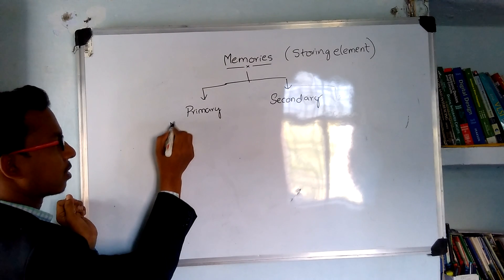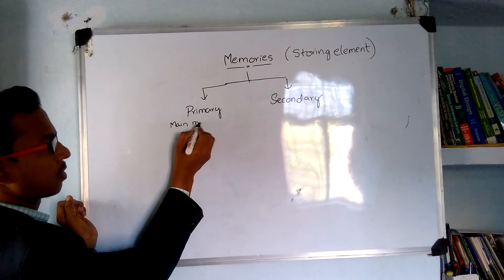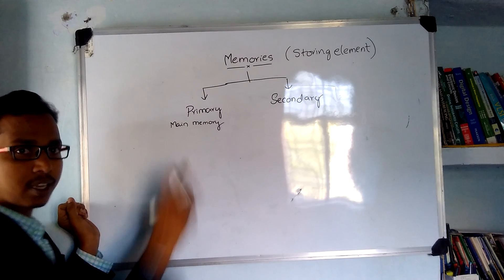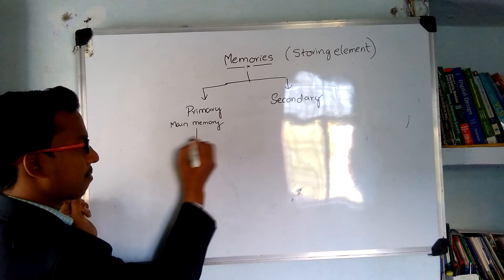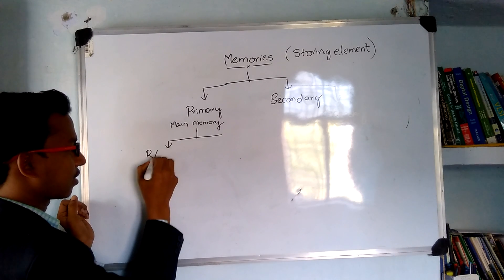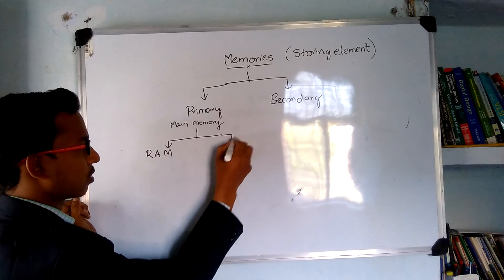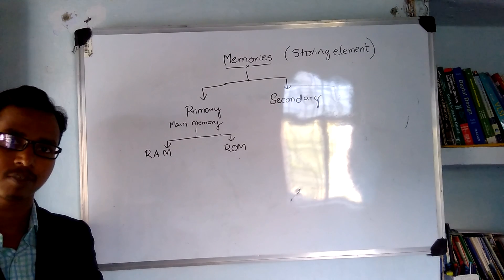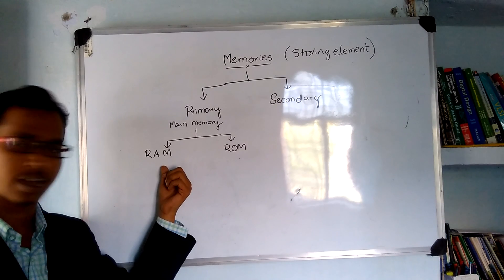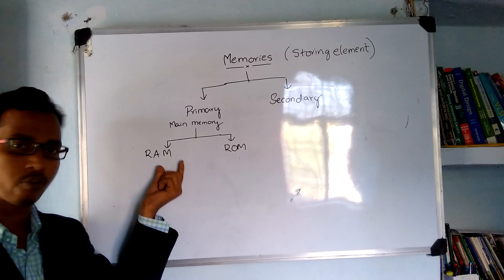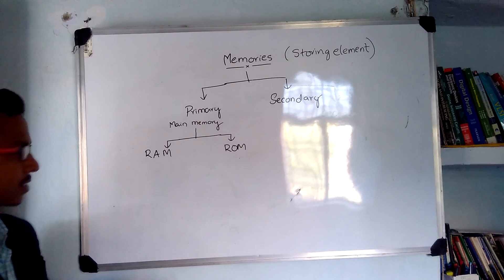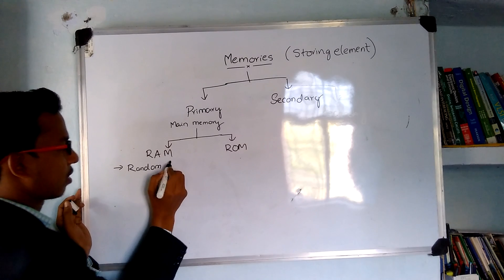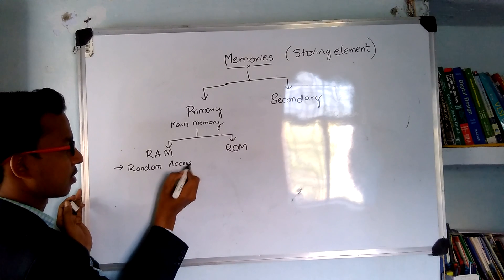Primary memory is also called main memory. The main memory is sub-classified into RAM and ROM. In smartphones today, we see specifications of RAM and ROM. RAM stands for Random Access Memory.